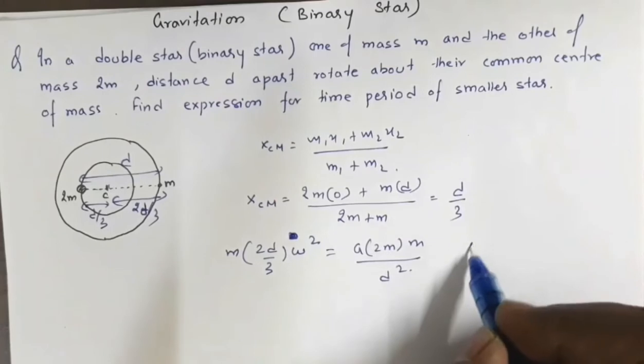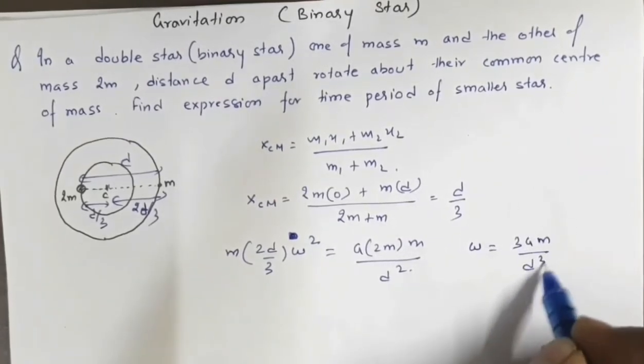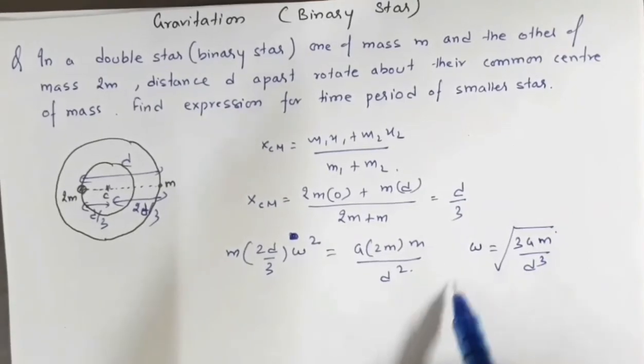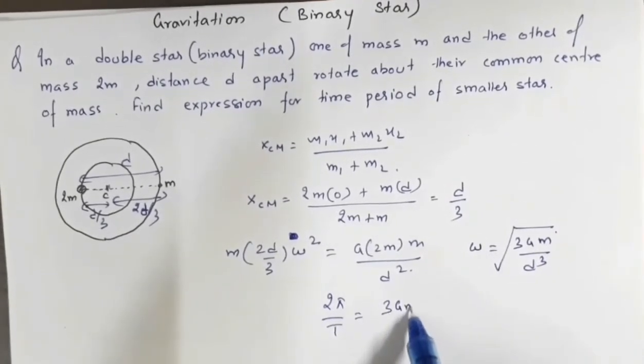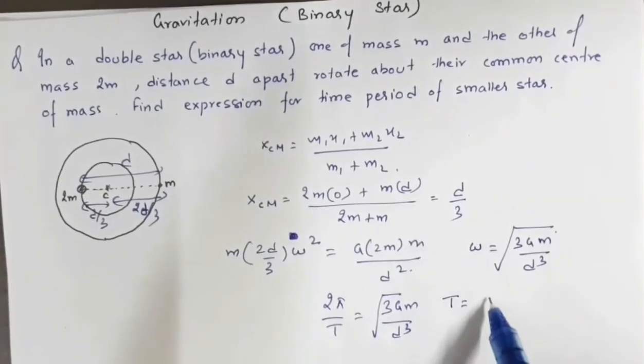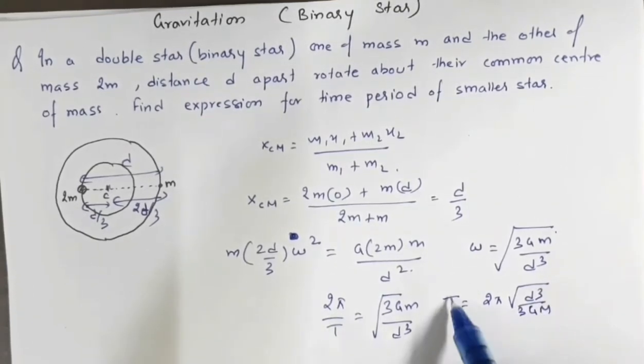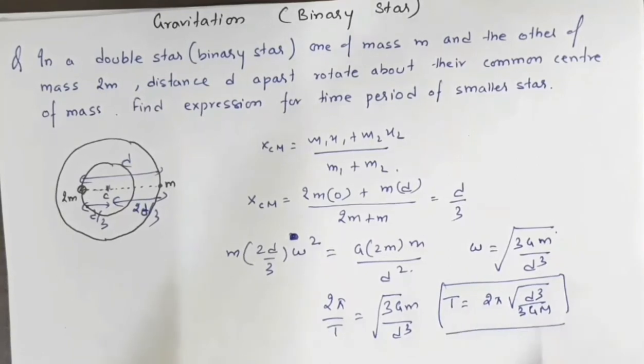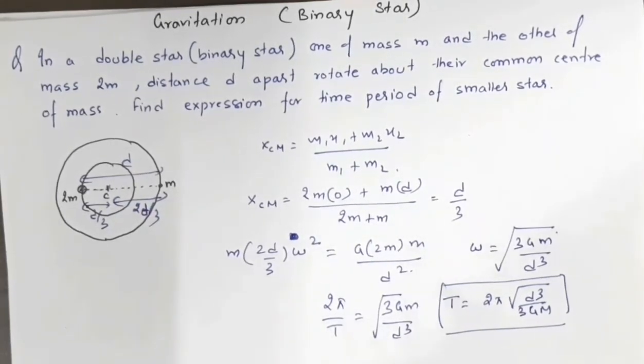From this we get ω = √(3Gm/d³). Since ω = 2π/T, we have T = 2π√(d³/3Gm). This is the expression for the time period of revolution of the star of mass m.